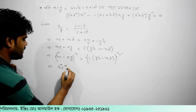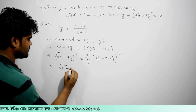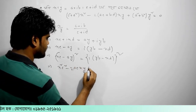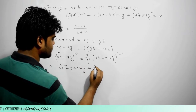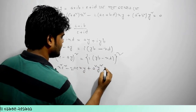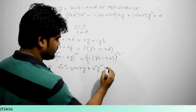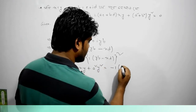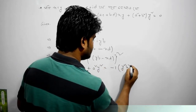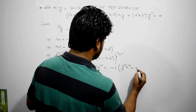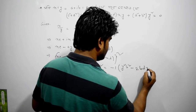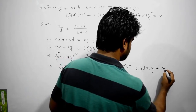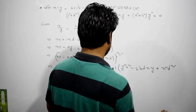c square minus 2ac xy plus a square y square, and here I will add minus 1, and here I will add minus y square b square minus 2bd xy plus x square d square.